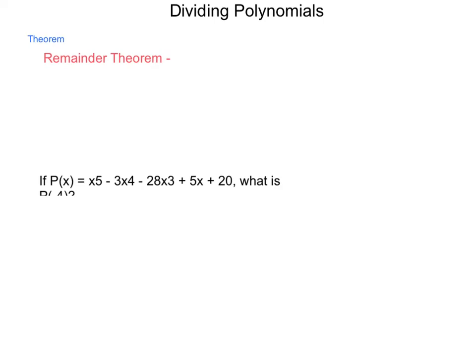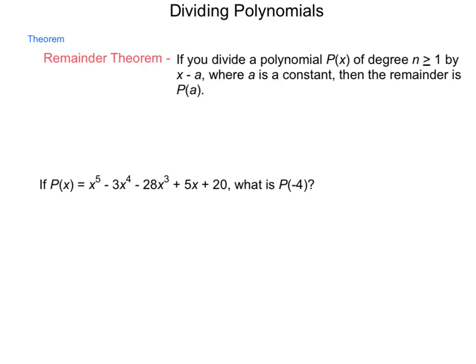And, the biggest thing we can do is what's called the remainder theorem. Now, the remainder theorem for polynomials, or for synthetic division, states, if you divide a polynomial P(x) of degree n ≥ 1 by x - a, where a is a constant, then the remainder is P(a). So, what this means is that if I go through and do the process of synthetic division, that whatever is in that last location is the value for what I was working for. So, a quick example of this, if I were to take P(x), which is x⁵ - 3x⁴ - 28x³ + 5x + 20, and I were to want to find P(-4), I have two routes I can go about this.